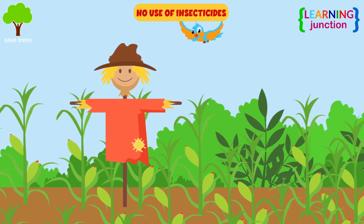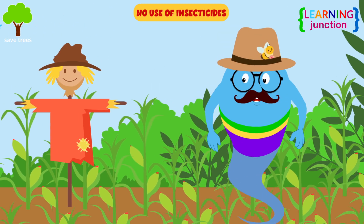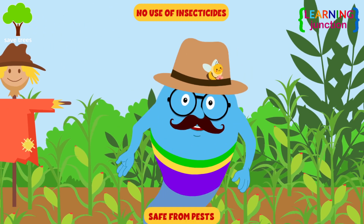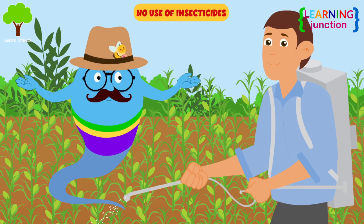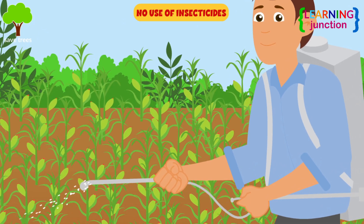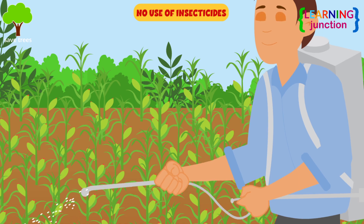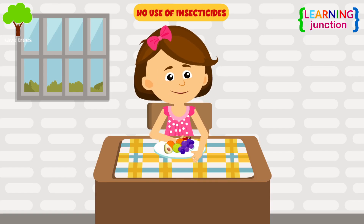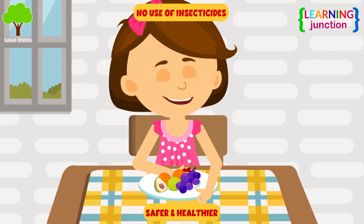No use of insecticides. If there are no insects, the crops will remain safe from pests. Farmers will not have to use pesticides to get rid of insects damaging their crops. Hence, the food sources will be safer and healthier to consume due to the absence of artificial pesticides.